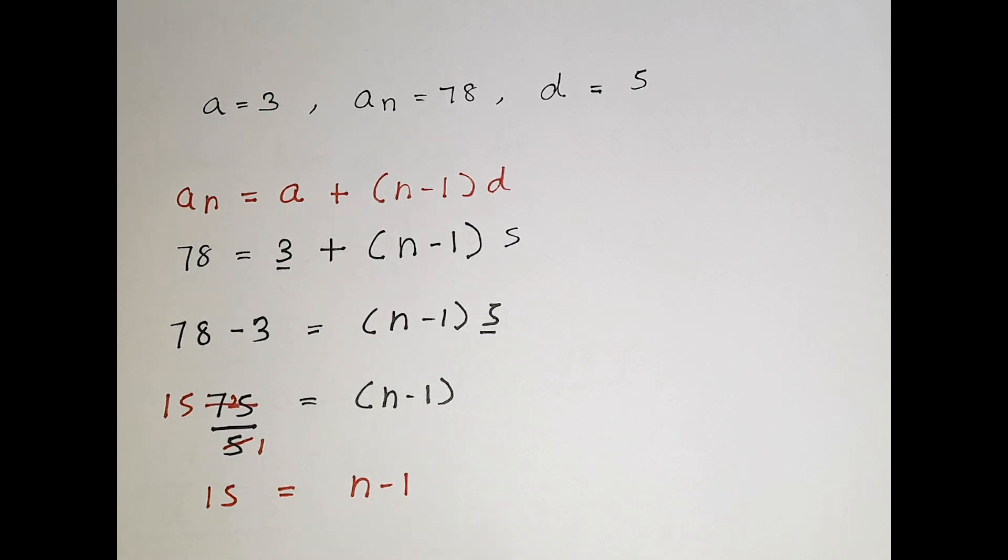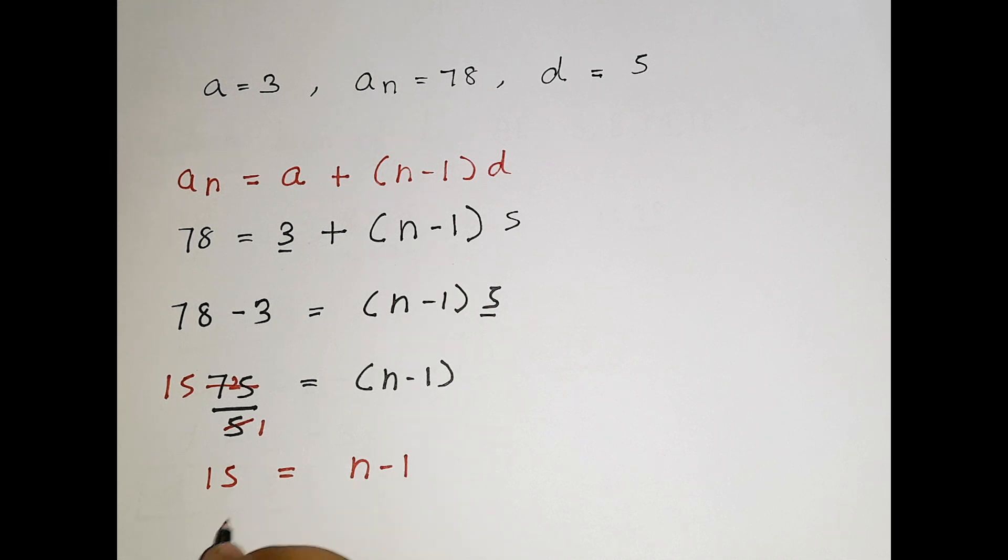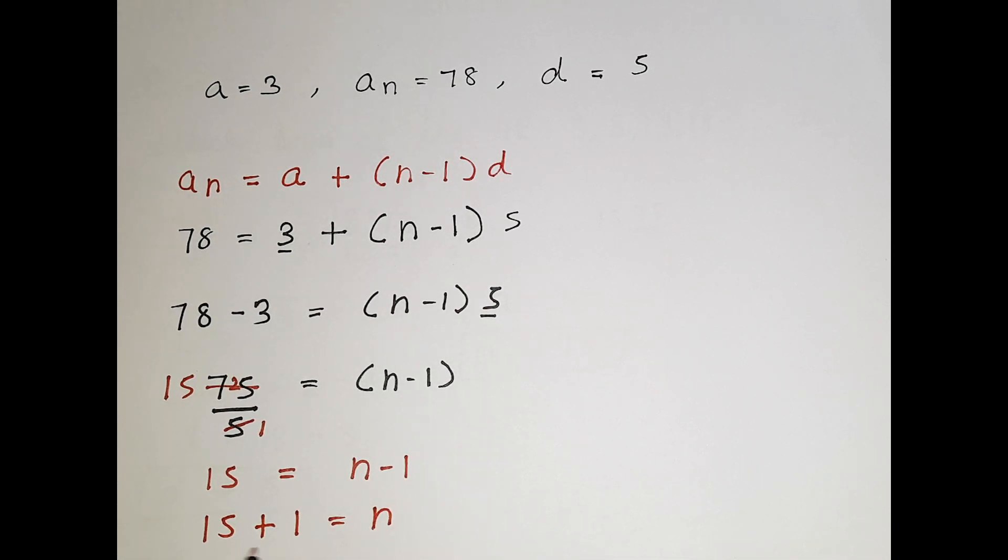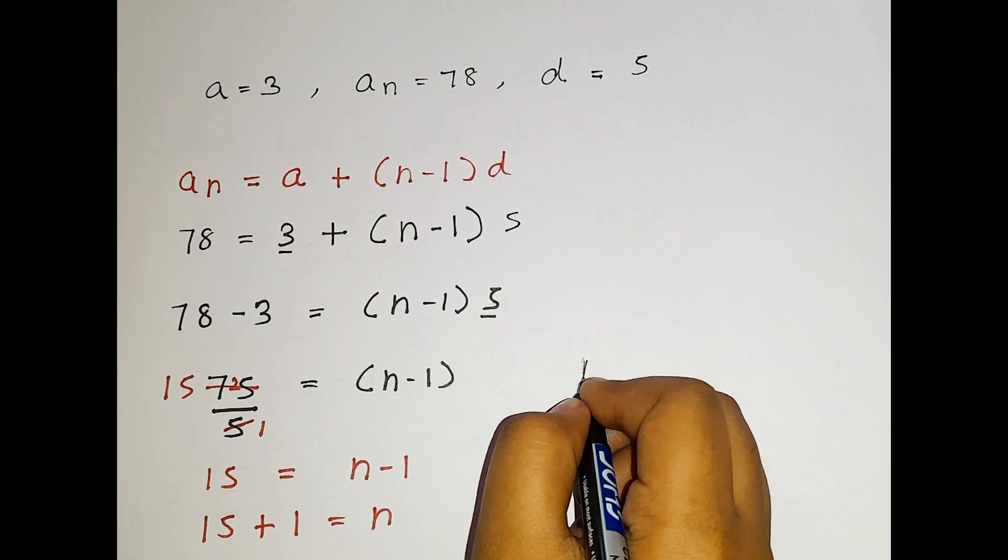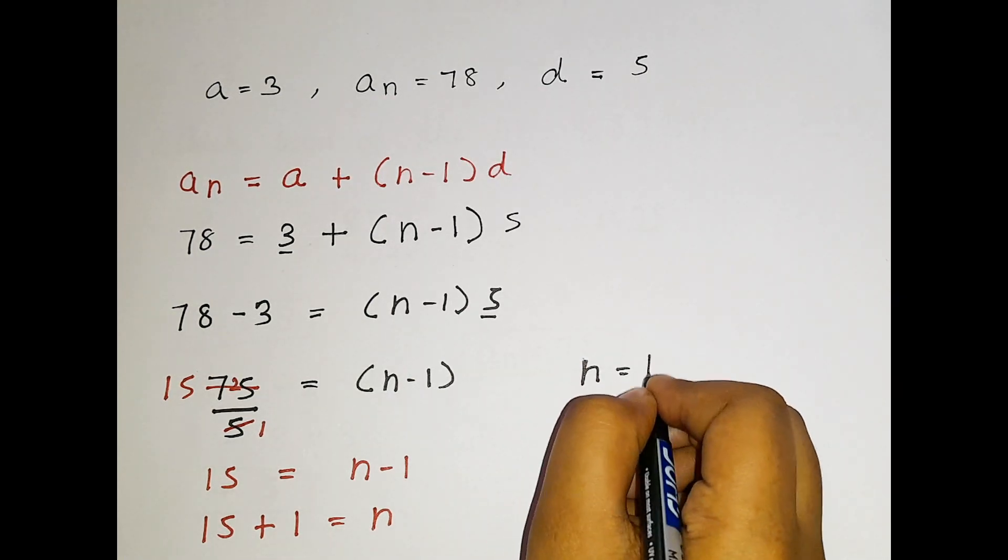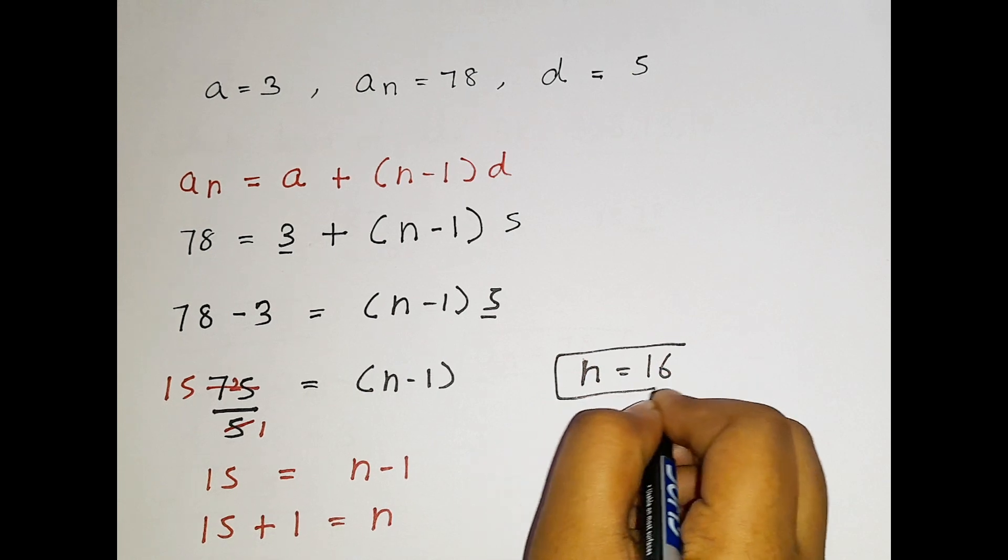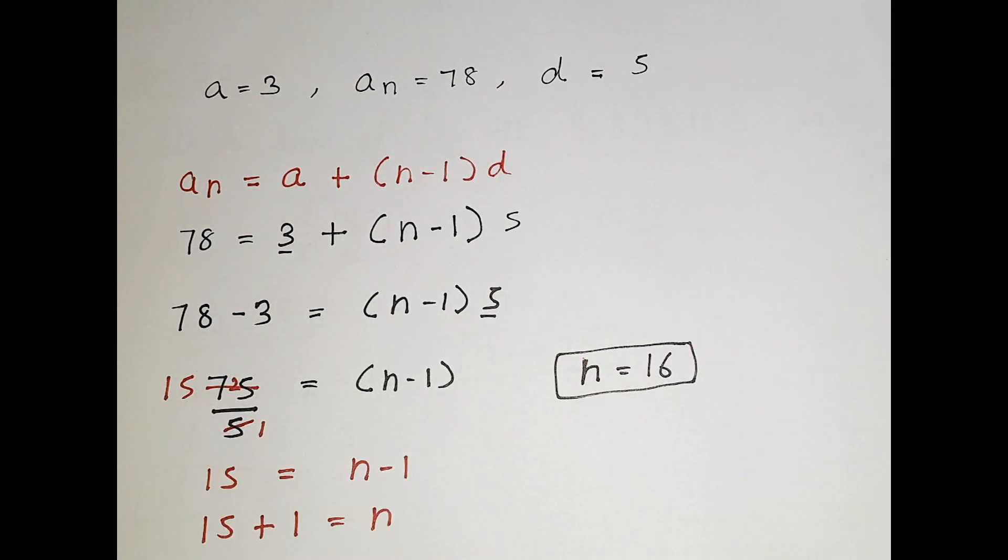Now what we can do? We can write 15 as it is equal to n minus 1. Now I am going to get this minus 1 to this side. When I get this minus 1 to this side, it changes into plus 1 is equal to n. What is 15 plus 1? 15 plus 1 is 16. Since you guys know 15 plus 1 is 16, then the n value is 16. Now we got the n value by using this formula.